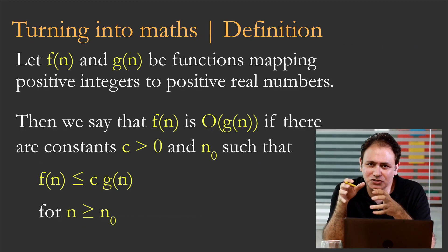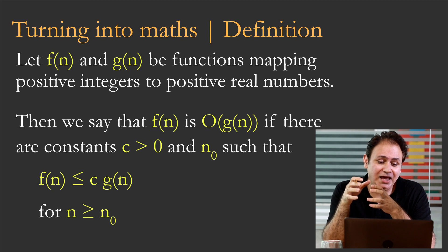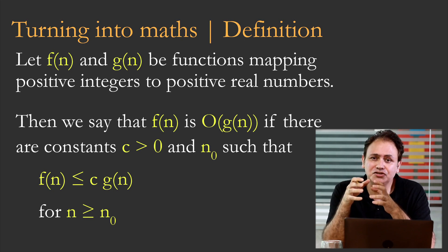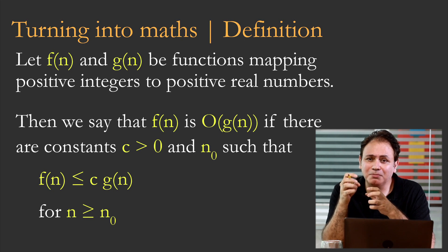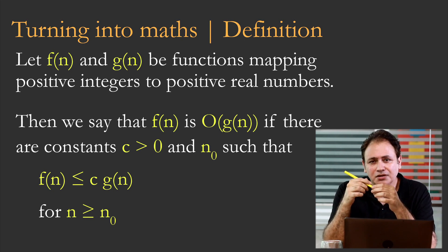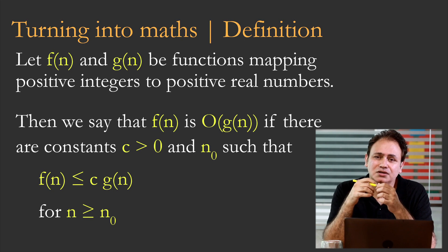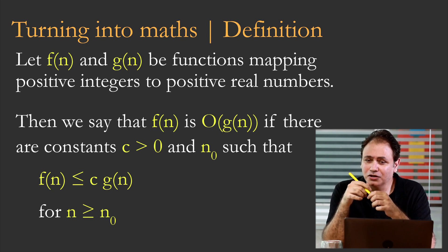So as we're turning this into math, what do we have? We have f(n) and g(n). So we let f(n) and g(n) be functions mapping positive integers to positive real numbers. And then we say that f(n) is O(g(n)) if there are constants c greater than zero and n₀.